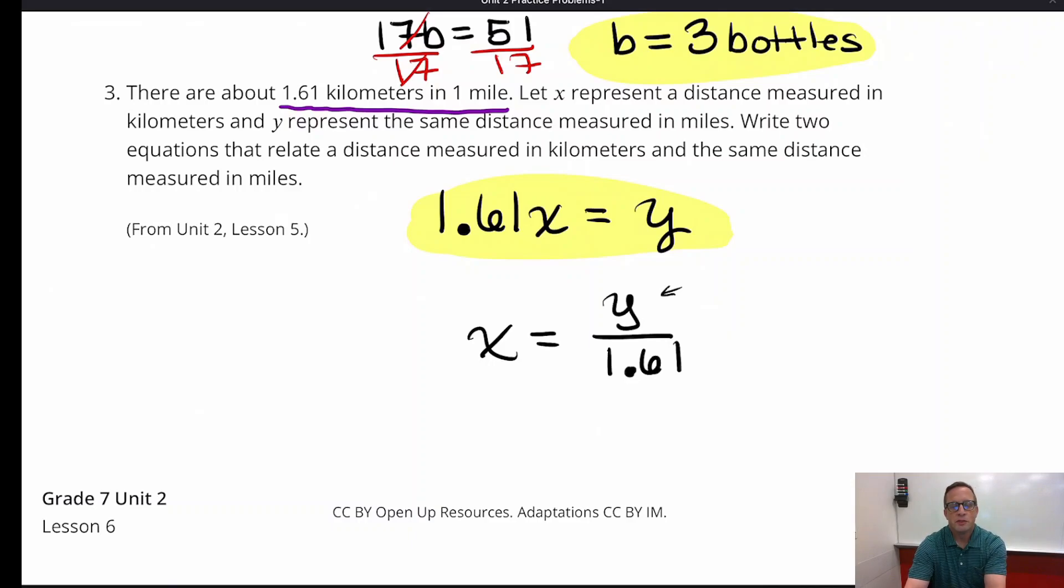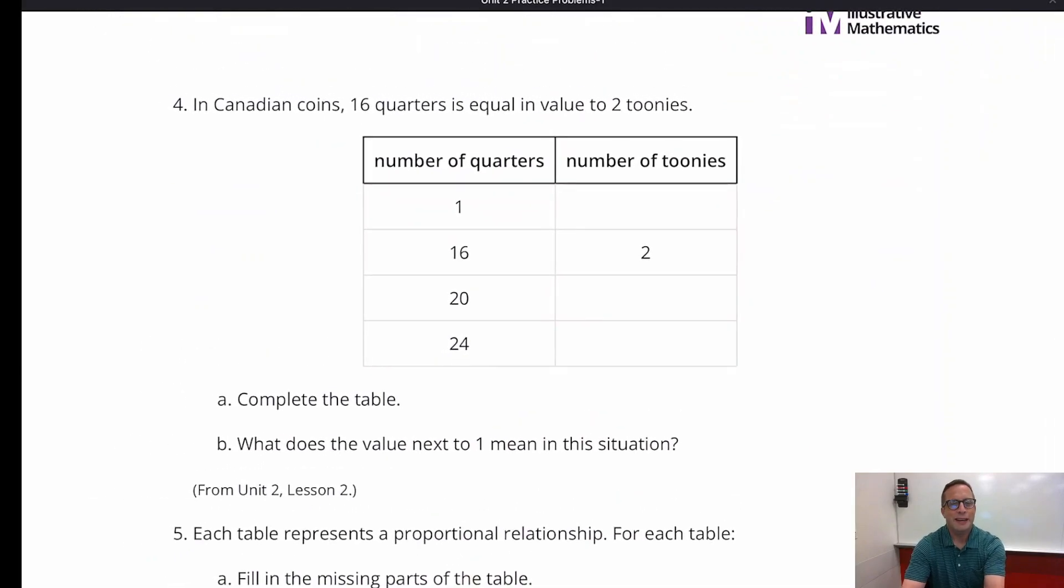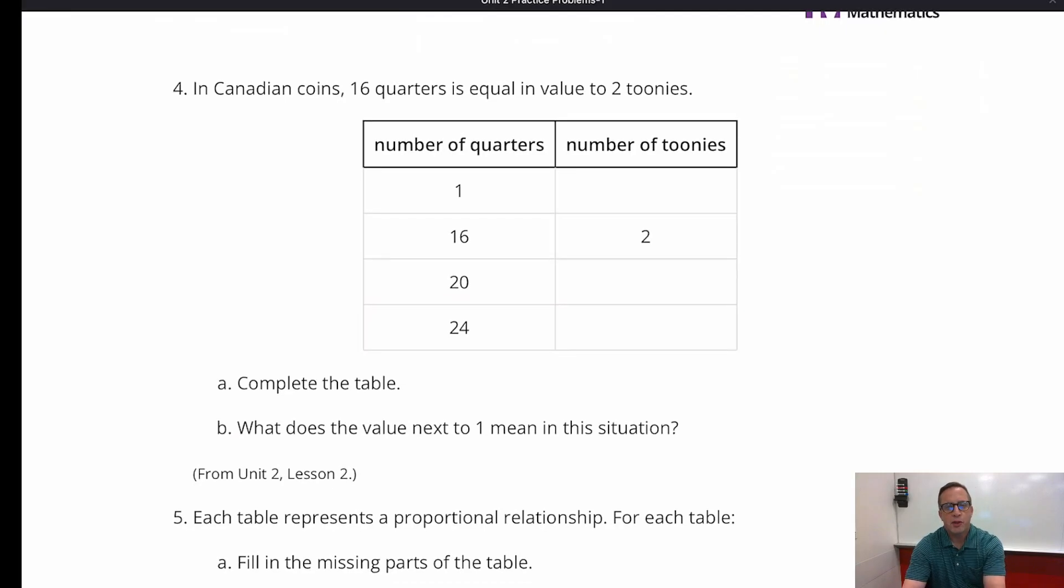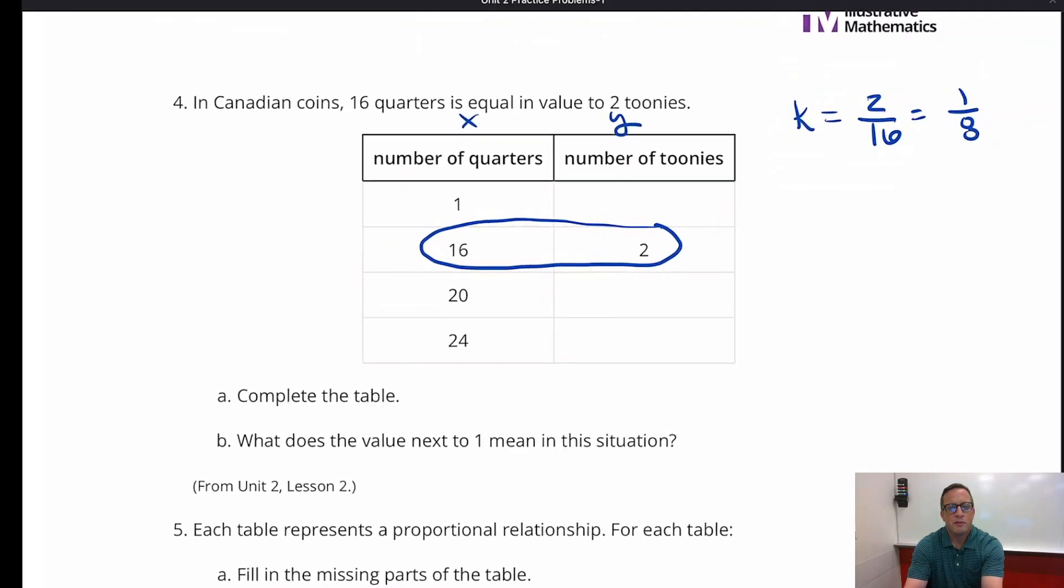So Y is the number of kilometers, whatever it is. And if you divide that by how many kilometers are in a mile, you're going to get the number of miles. Okay, number four. In a Canadian coin, 16 quarters is equal to the value of two toonies. And so right there, that kind of tells us, you're always looking for the information where both the X and the Y are given. And that right there, we have it. If you want to look for the constant proportionality, it's always Y divided by X. So 2 divided by 16. And if you do that in your calculator you can get a decimal. I think it's easier if you just leave it as 1 eighth, like reduce it like a fraction. So there's your constant of proportionality.